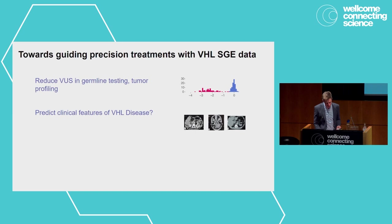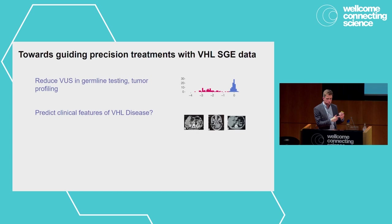How can we actually use this data for guiding treatments for patients with VHL disease? From the strength of separation we're seeing between neutral and CCRCC variants, we can certainly reduce variants of uncertain significance seen in both germline testing and tumor profiling, which may be important for predicting therapy response. We can also start using this data to give patients a more precise calibration of where their VHL disease may go over time.